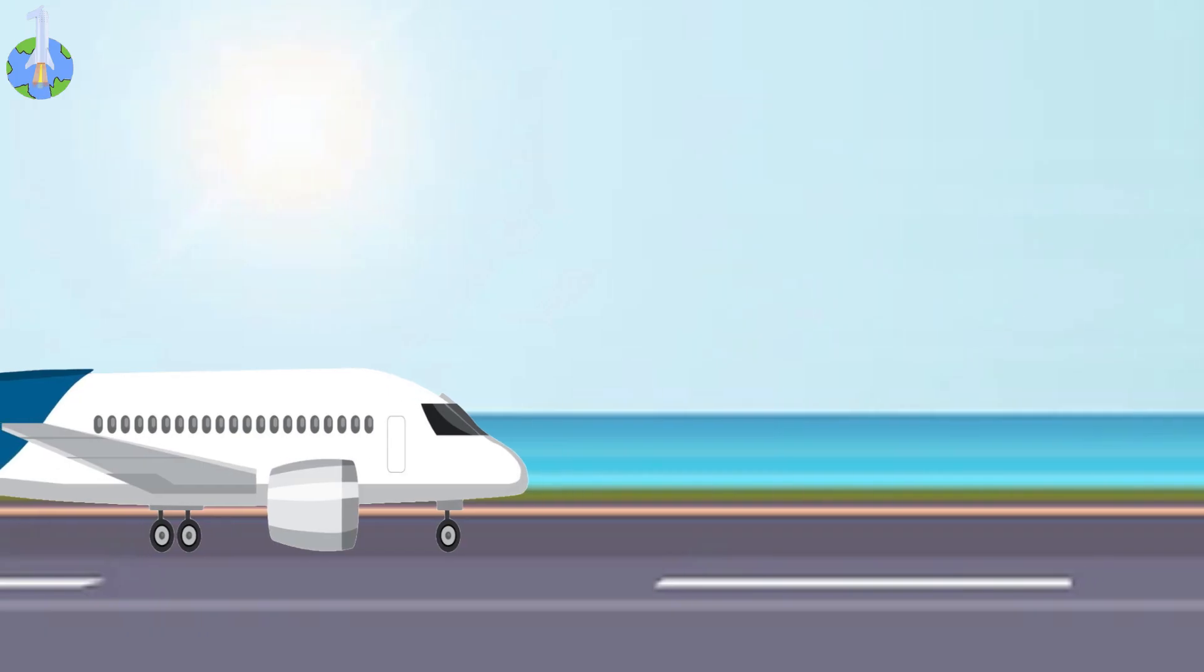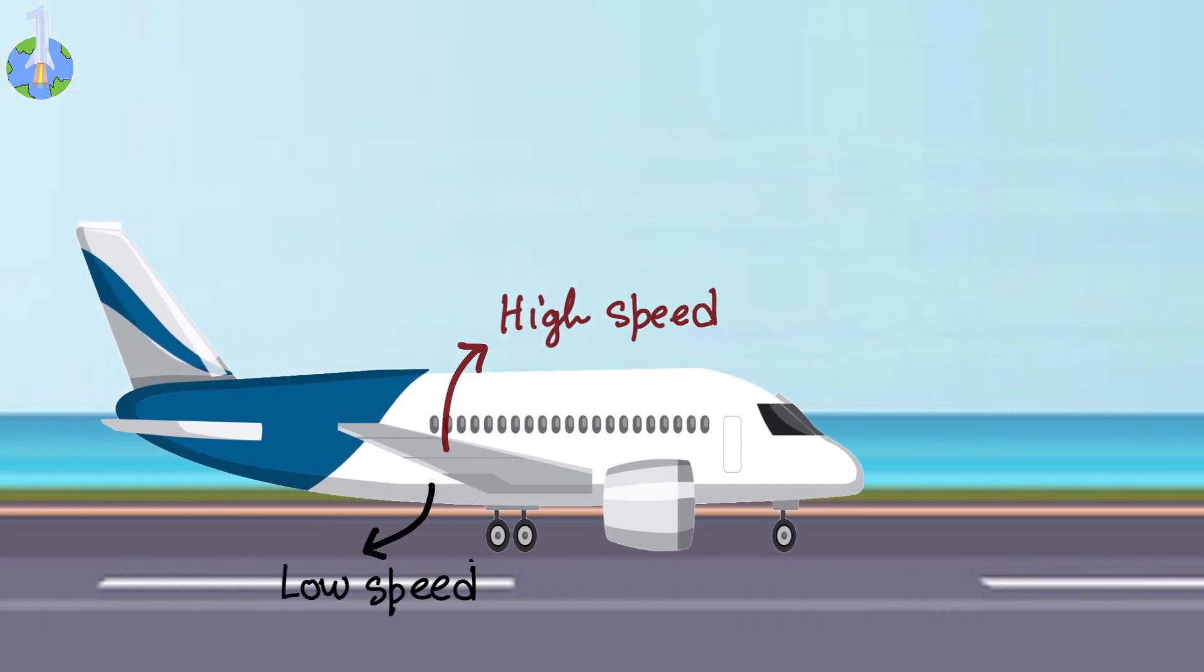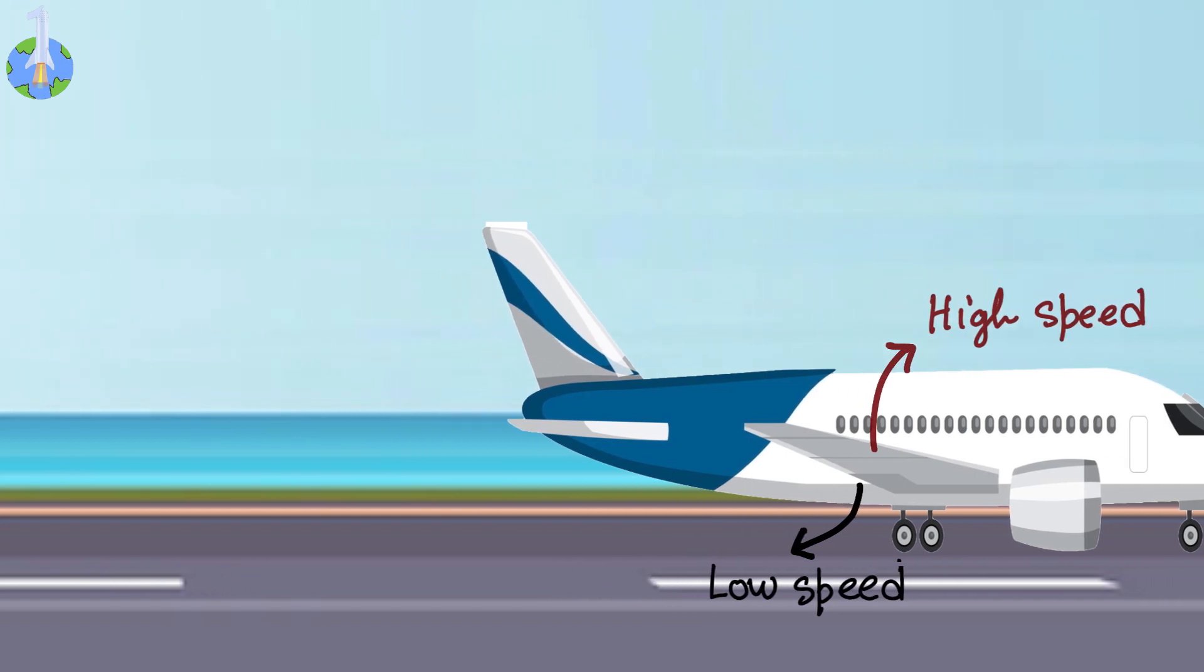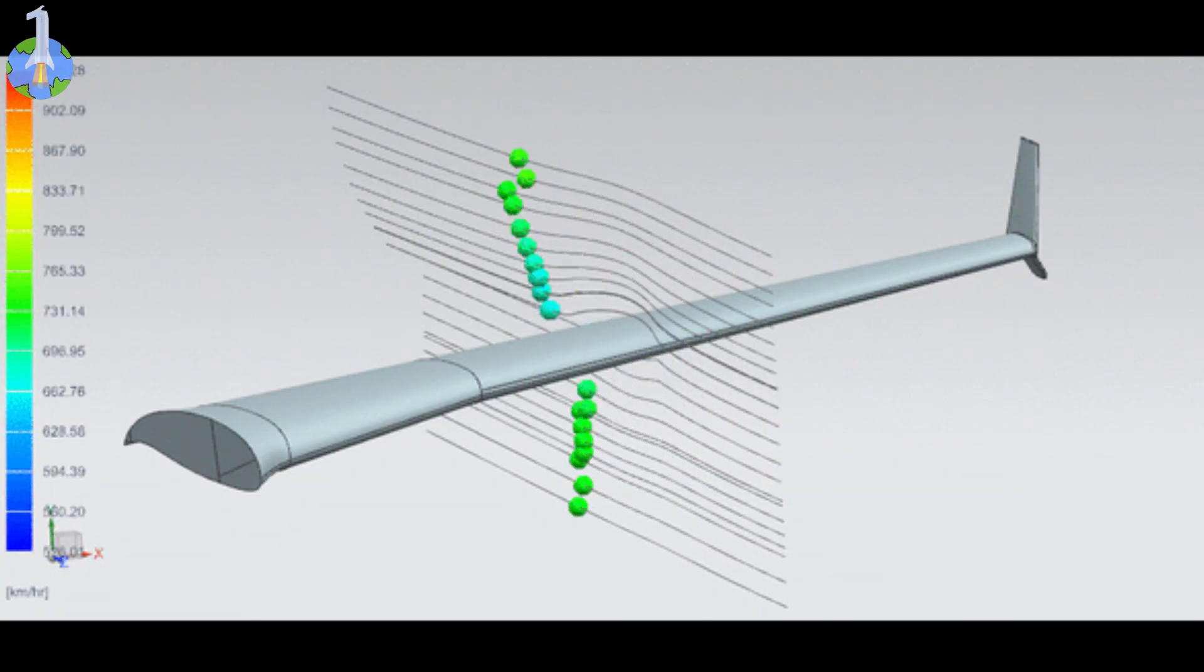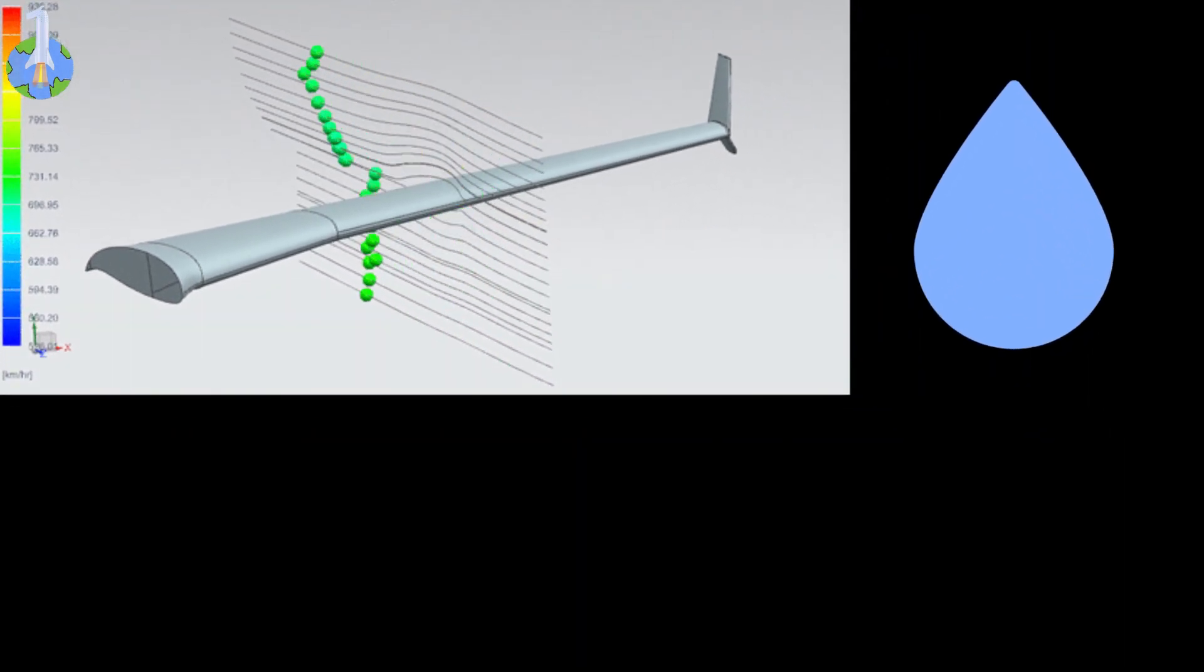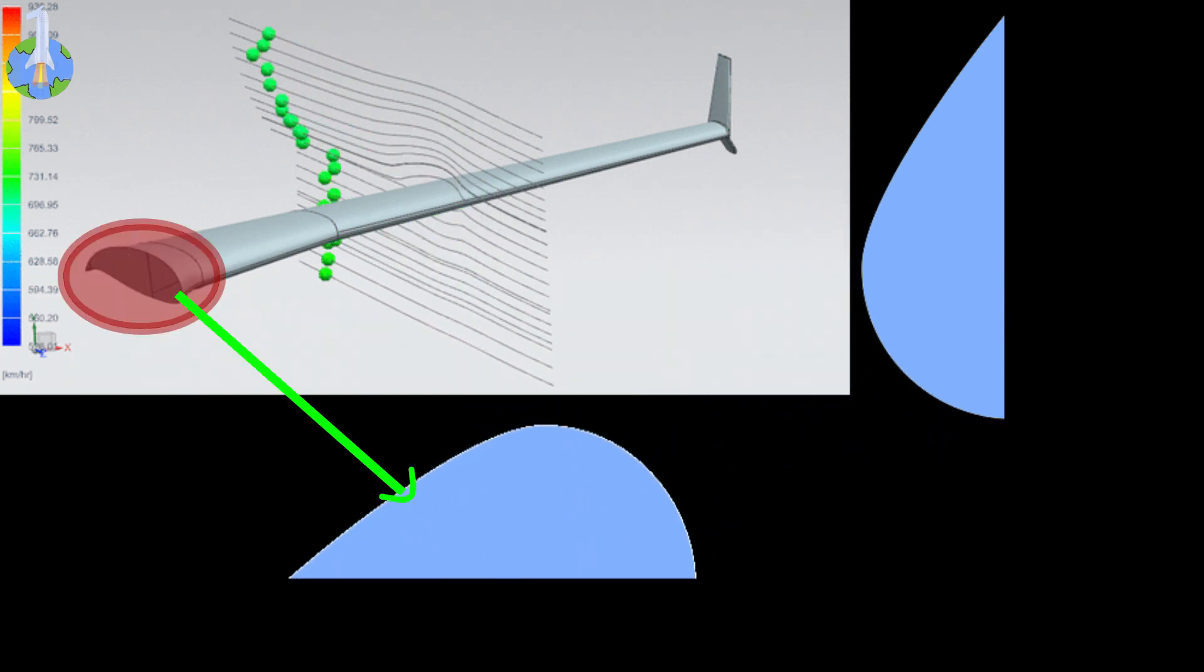But what is a stall? When a plane is speeding up on the runway, the speed of air above the wing is relatively higher than the speed of air beneath the wing due to the design of the wing. The shape of the wing allows air to stick to it. If you were to cut out a section of the wing and look at it from the side, it would roughly resemble a teardrop that is cut in half from the tip to the tail with curved sides pointing up.